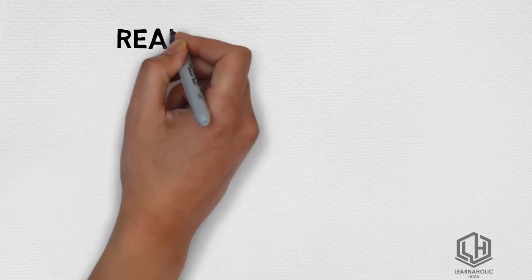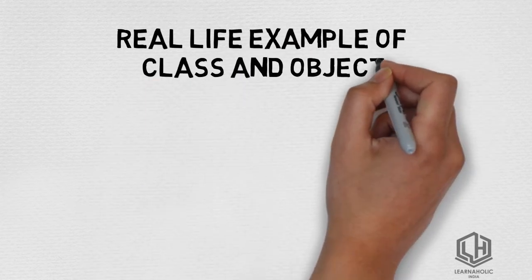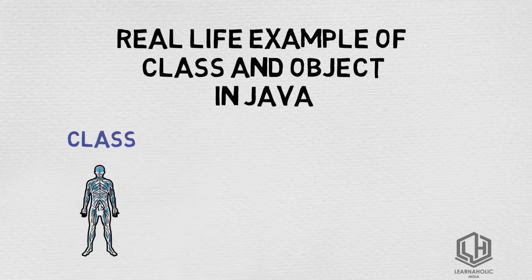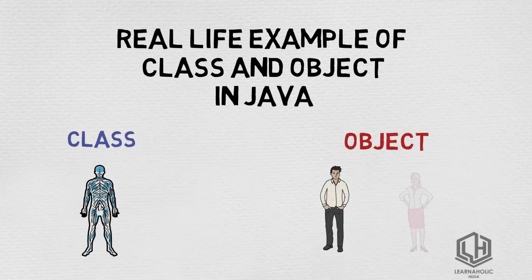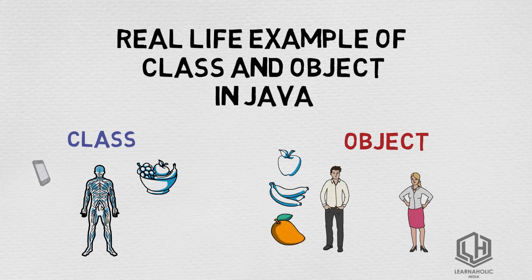Let's see some real-life examples of class and object in Java to understand the difference well. Class: Human — Objects: man, woman. Class: Fruit — Objects: apple, banana, mango, guava, etc. Class: Mobile Phone — Objects: iPhone, Samsung, Moto.